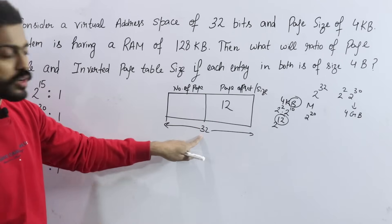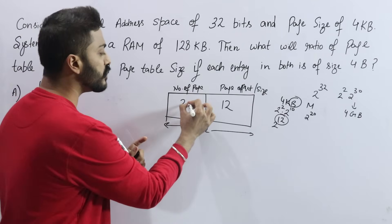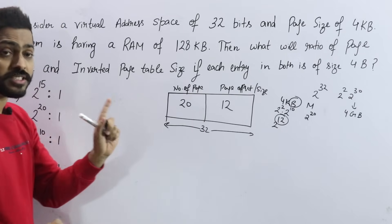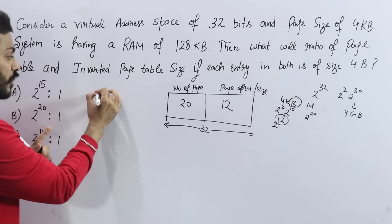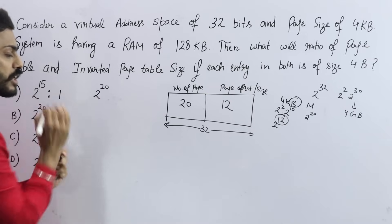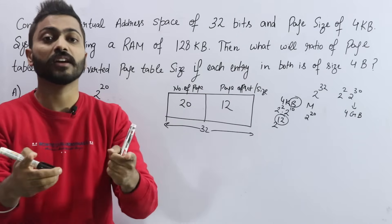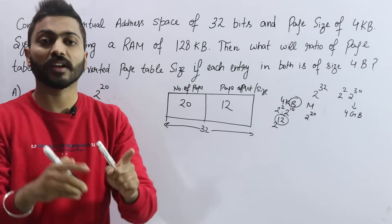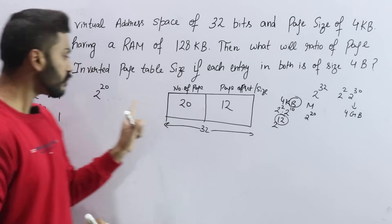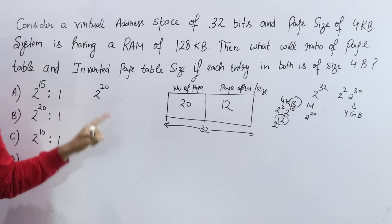Total address size is 32 bits, page offset is 12 bits, so the number of bits for page number is 20. Number of pages is not 20 — it is 2 raise to power 20, because 20 is the number of bits used to represent the page number.